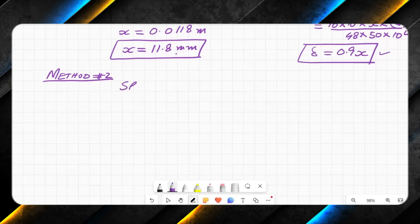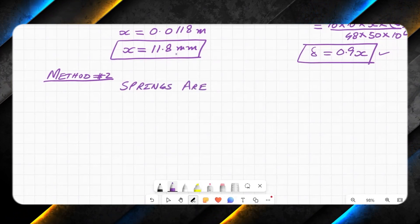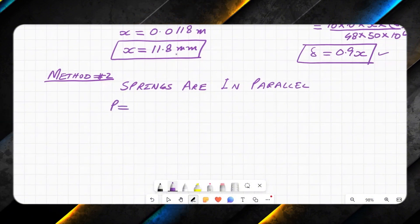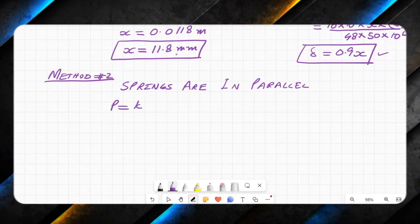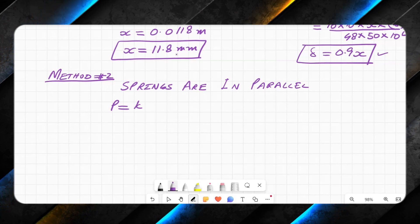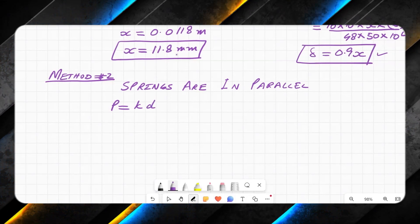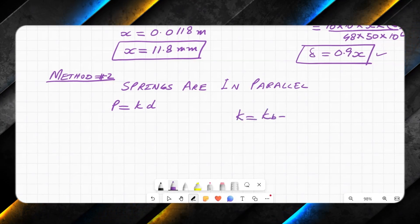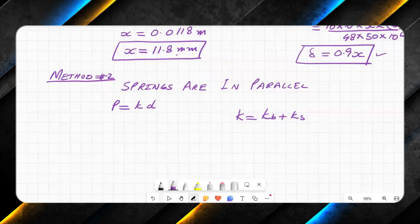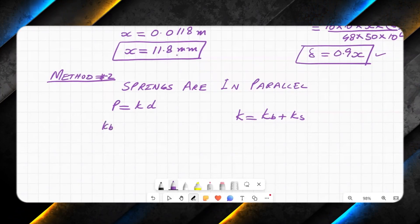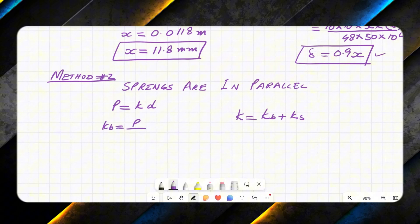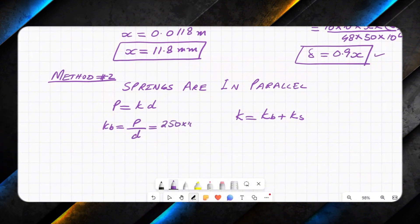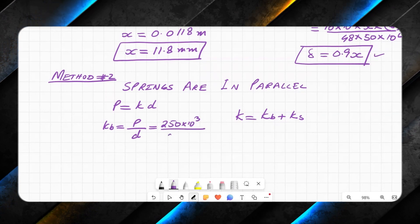So in method two, the springs are in parallel. Beam is a spring as well. Using this formula, force equals k times any displacement, k times d. So total stiffness will be equal to kb plus ks.